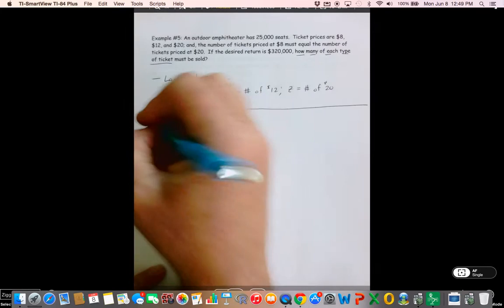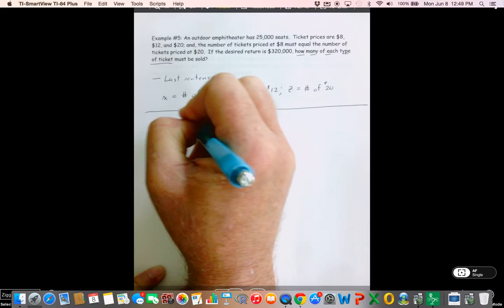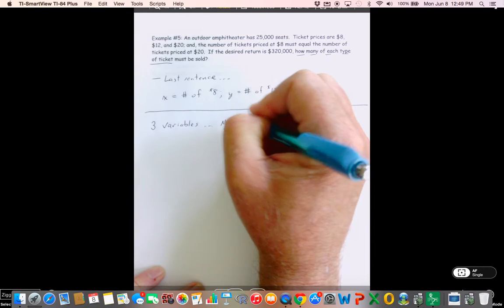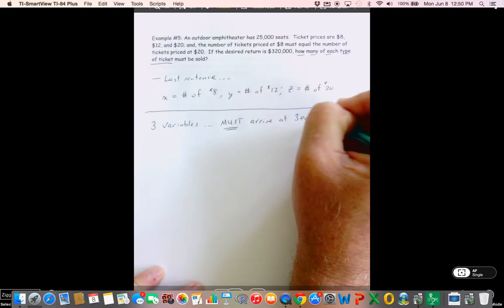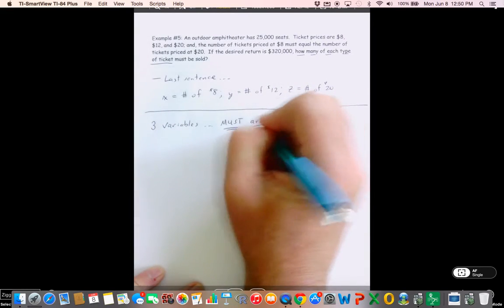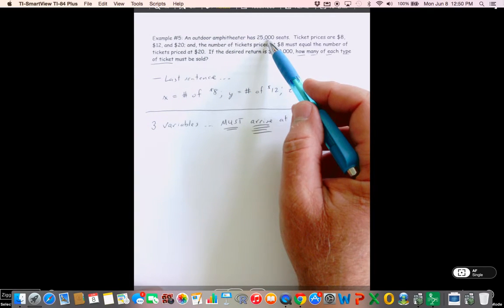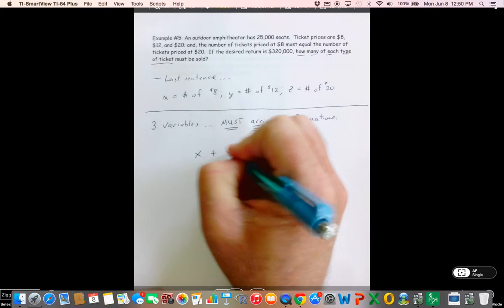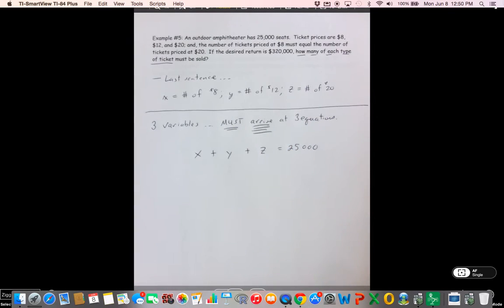Alright gang, we've got three variables. This tells us that we must arrive at three equations. Well, one of these is really easy. This outdoor amphitheater which consists of $8, $12, or $20 tickets is 25,000. So I know that the sum of all of these numbers of tickets has to be 25,000.